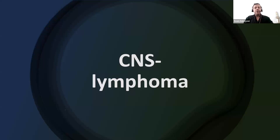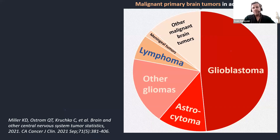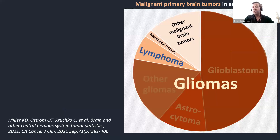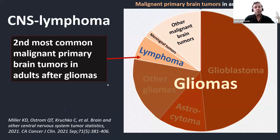What can we tell about central nervous system lymphoma? It's not as frequent as some of the other tumors. On this chart, you see the most frequent malignant brain tumors in adult patients. The majority are part of the glioma family, with glioblastoma taking up almost half. Nevertheless, if we consider the gliomas as one group, CNS lymphomas are the second most common malignant primary brain tumors in adults.